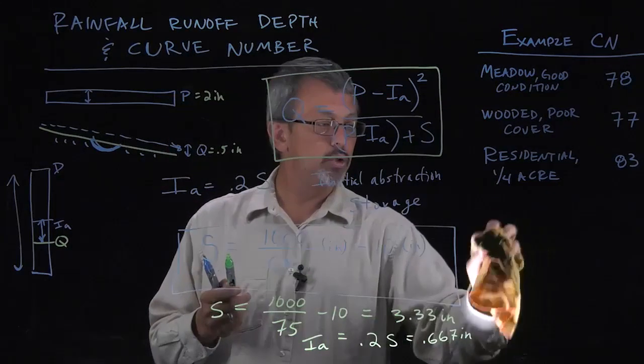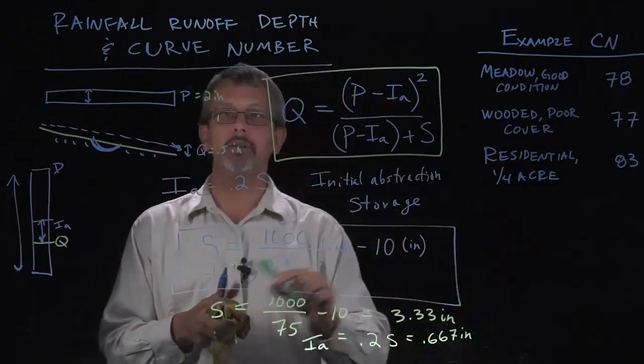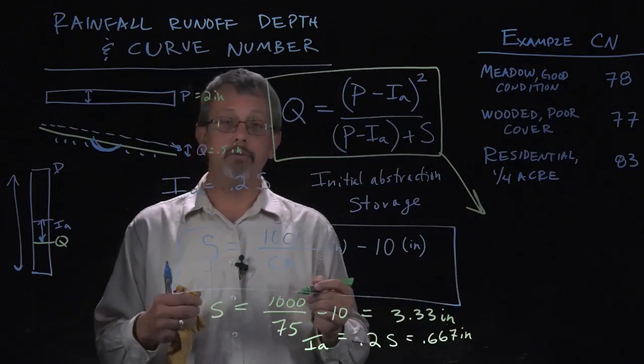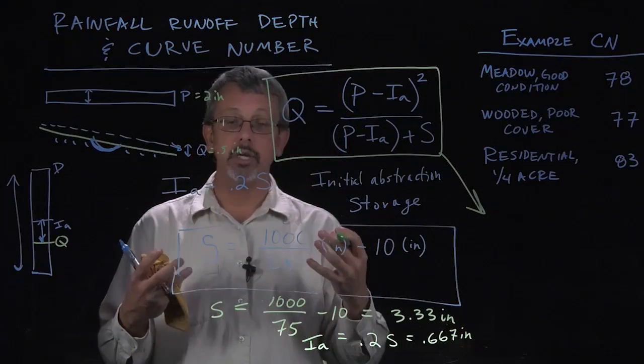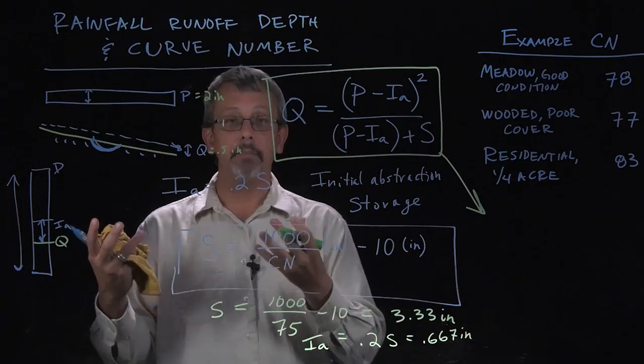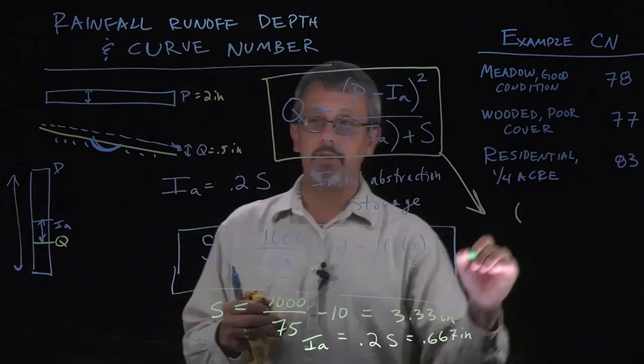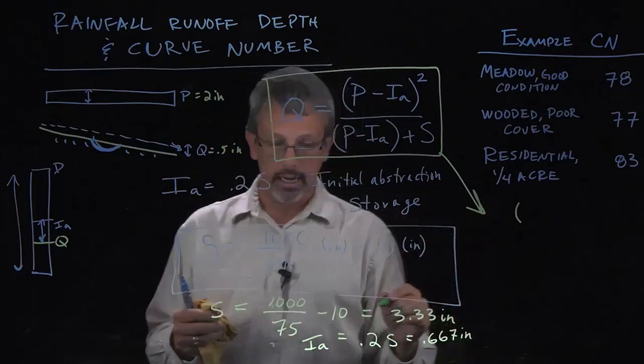Using those values and plugging them into this curve number equation, we can get an estimate for how many inches of this rainfall end up leaving as runoff. In that case, we just plug in the various numbers.